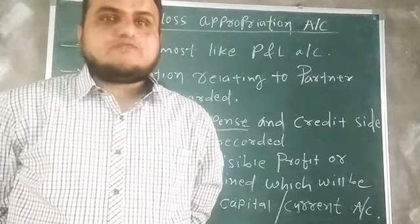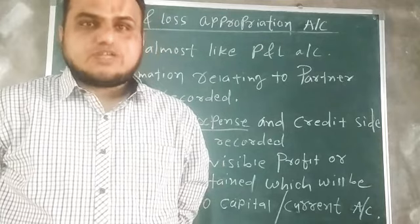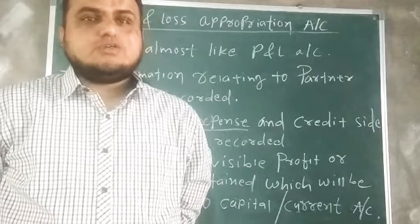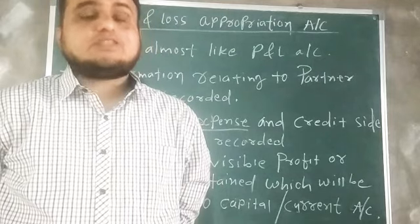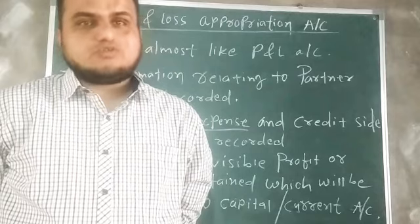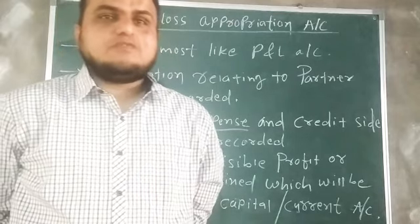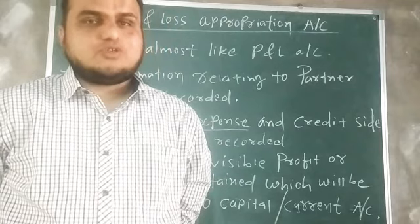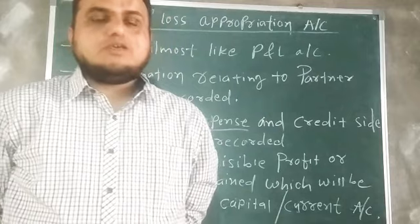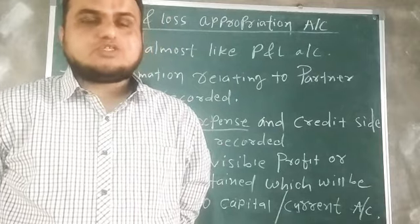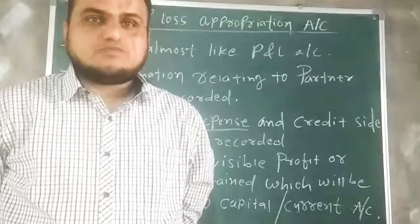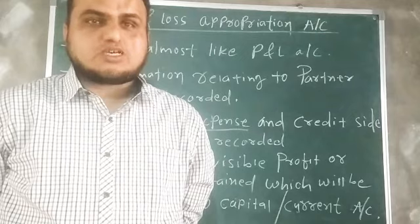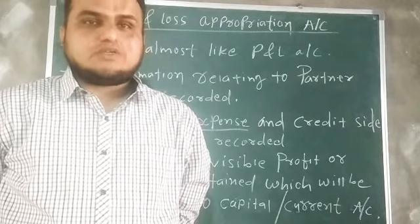While preparing the final accounts for partnership, apart from trading account, profit and loss account, and balance sheet, we have to prepare a few additional extra accounts. The trading account will be the same as in 11th standard, and the profit and loss account has no change. But between the profit and loss account and the balance sheet, two extra accounts must be prepared — one is the profit and loss appropriation account, and the other is the capital account.